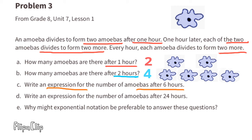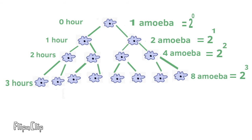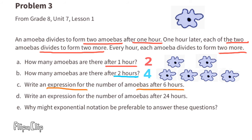Part A: after 1 hour there were 2 amoebas. Part B: after 2 hours there were 4 amoebas. Part C: write an expression for the number after 6 hours. Looking at the pattern: hour 0 is 2 to the 0th, hour 1 is 2 to the 1st, hour 2 is 2 squared, hour 3 is 2 cubed. Following this pattern, after 6 hours the expression is 2 to the power of 6, which equals 64.